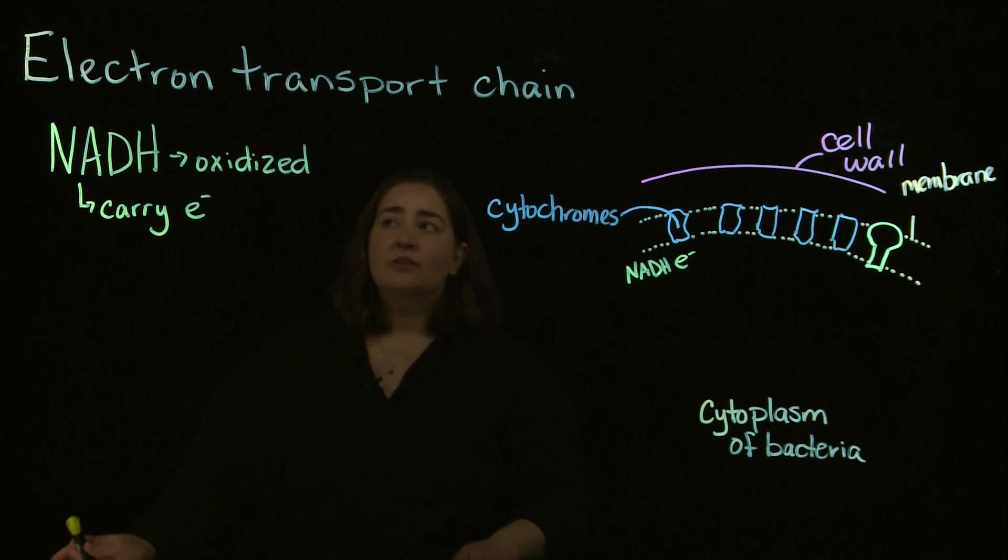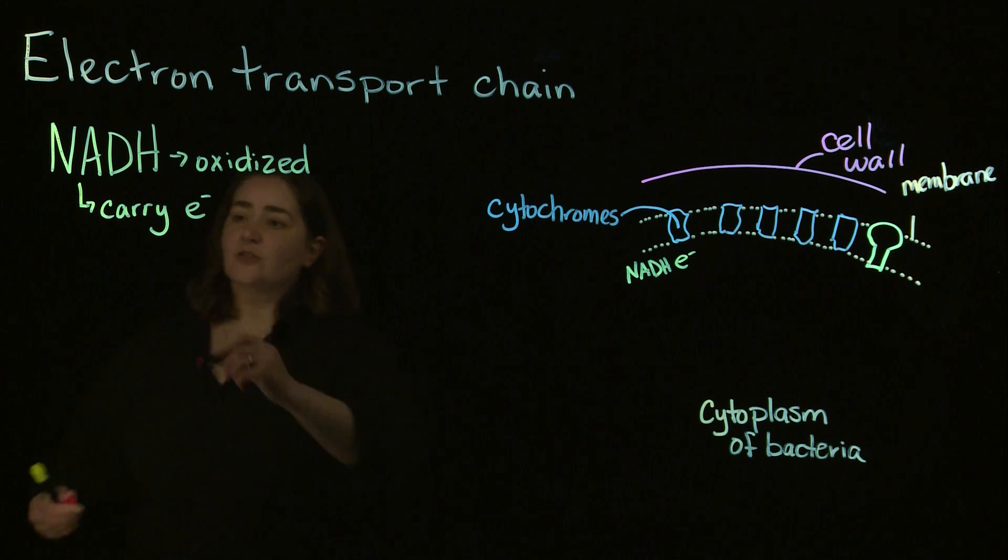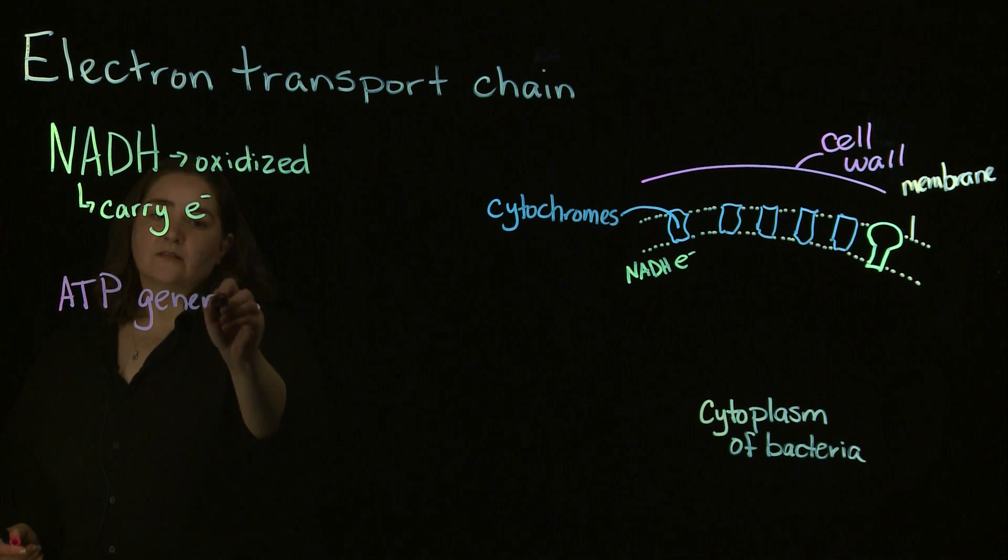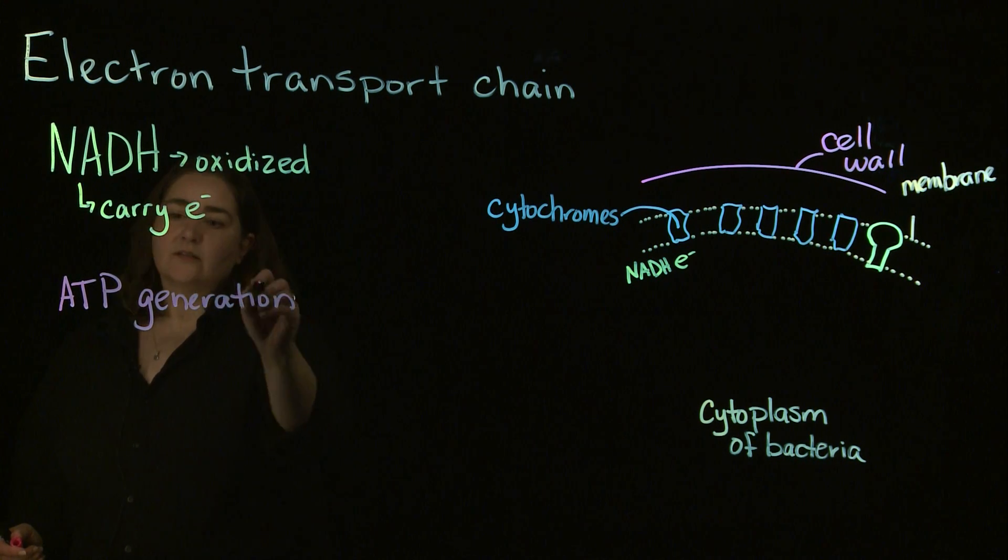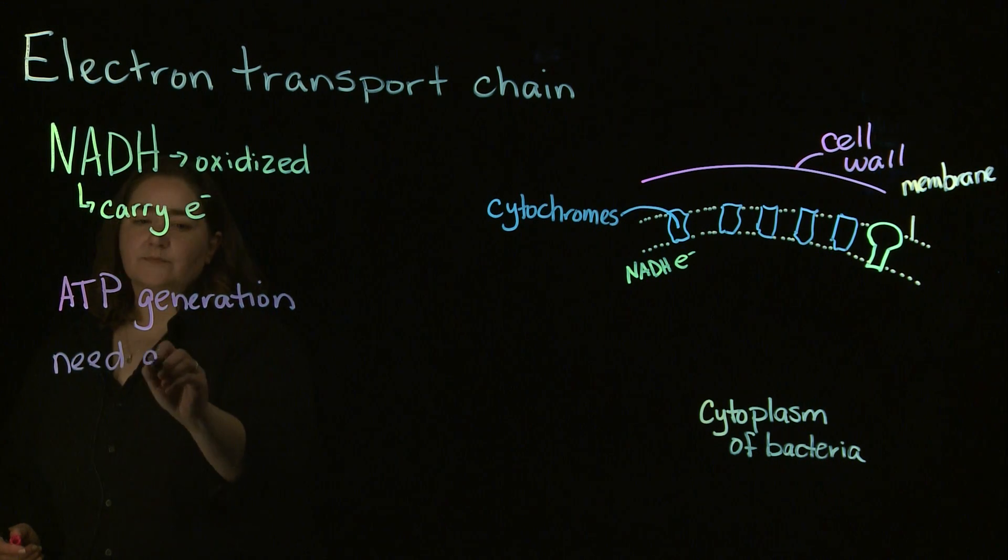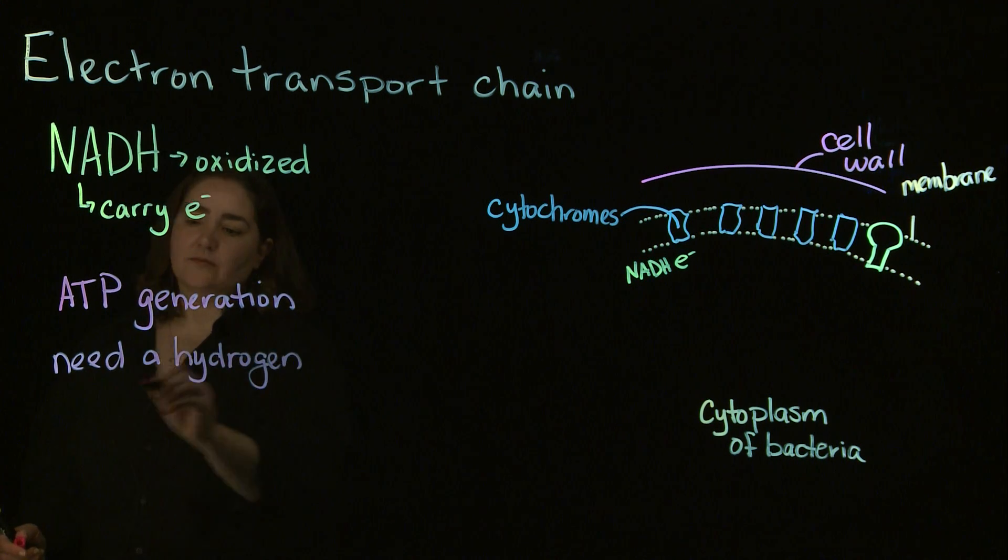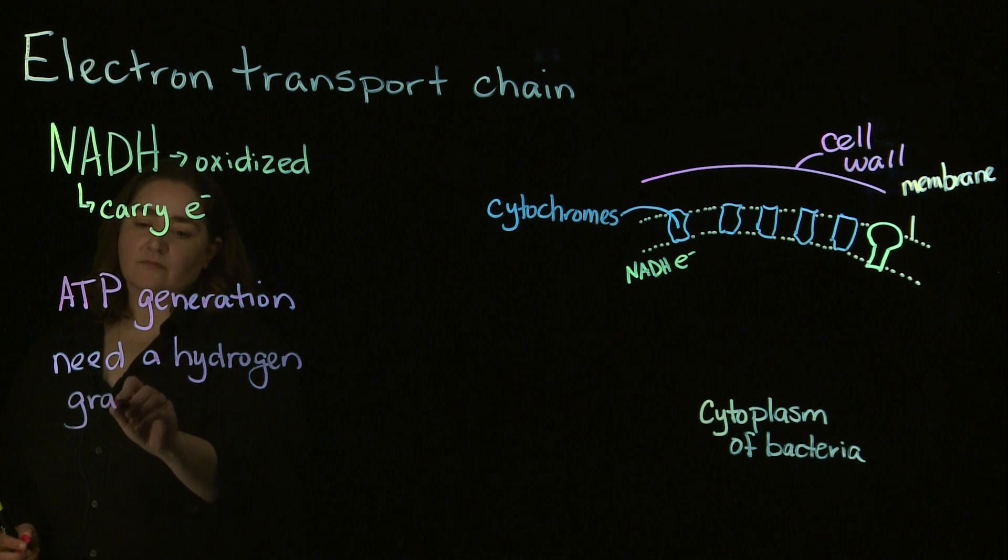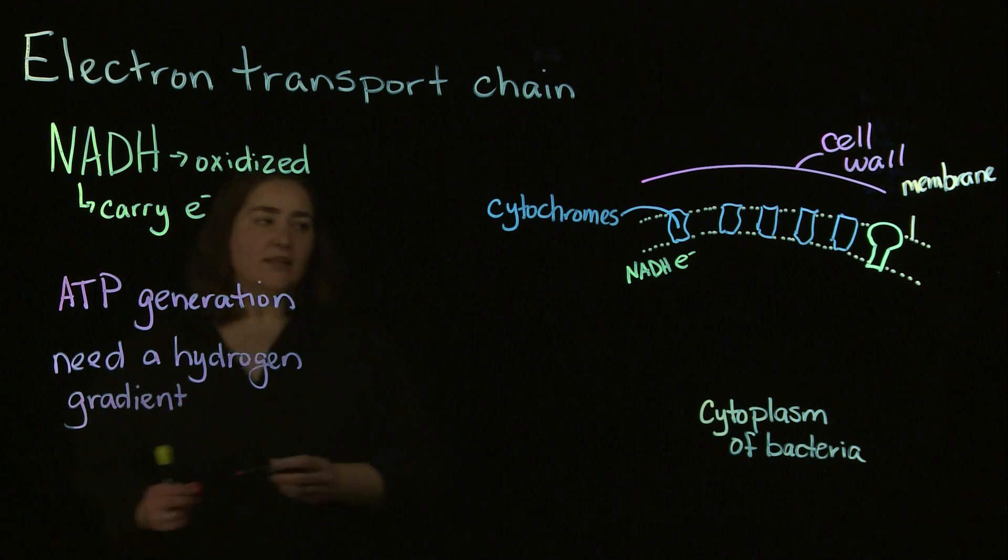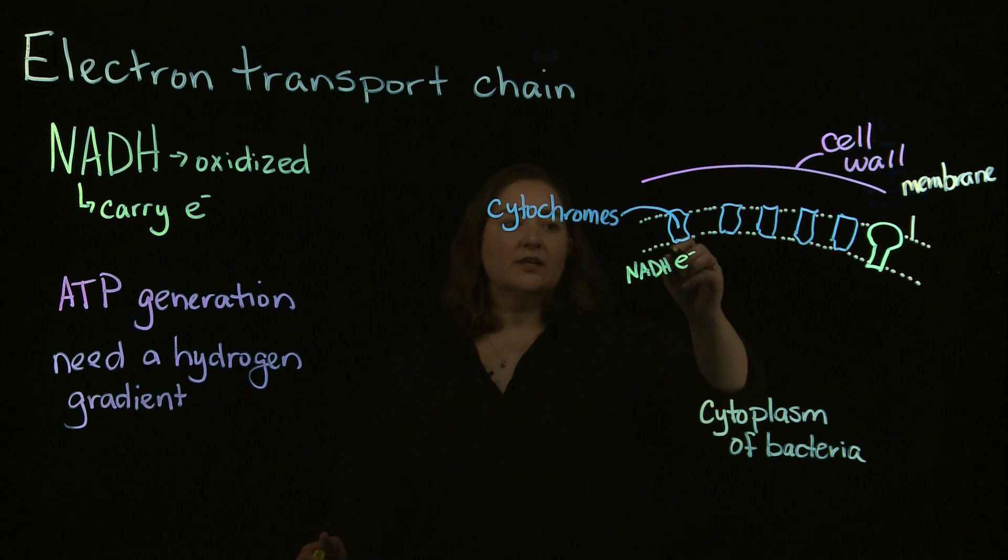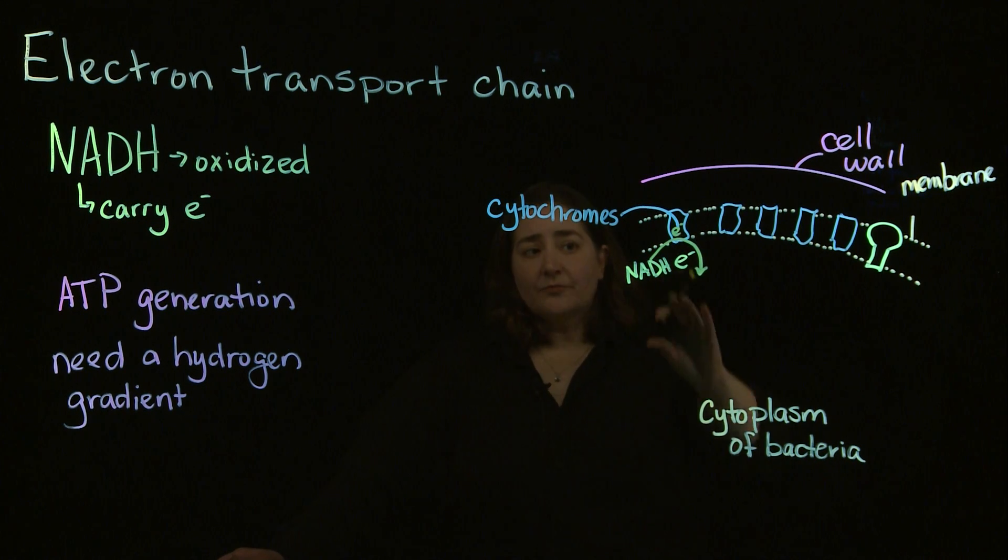Because in order to generate ATP in the electron transport chain, we need to generate a hydrogen gradient. And the way that's going to happen, that NADH is going to come in and it's going to deposit that electron into the first cytochrome as part of our electron transport chain.